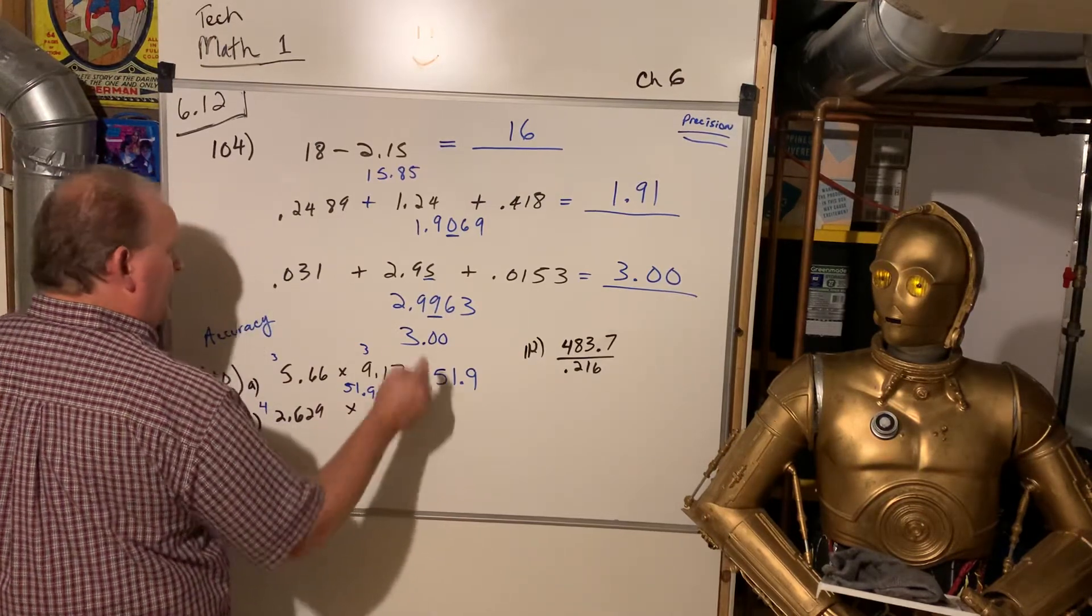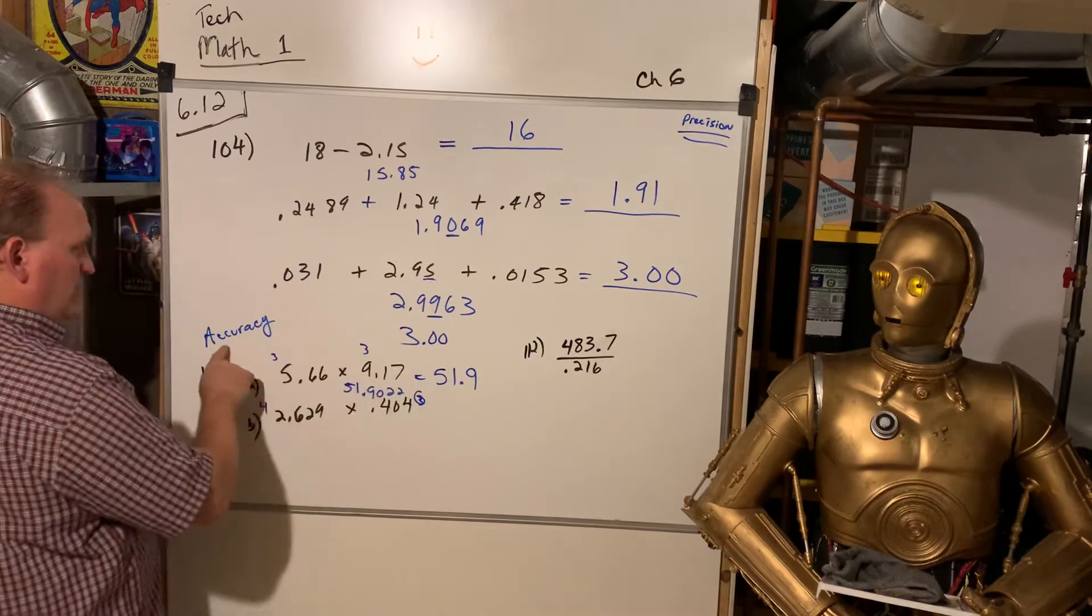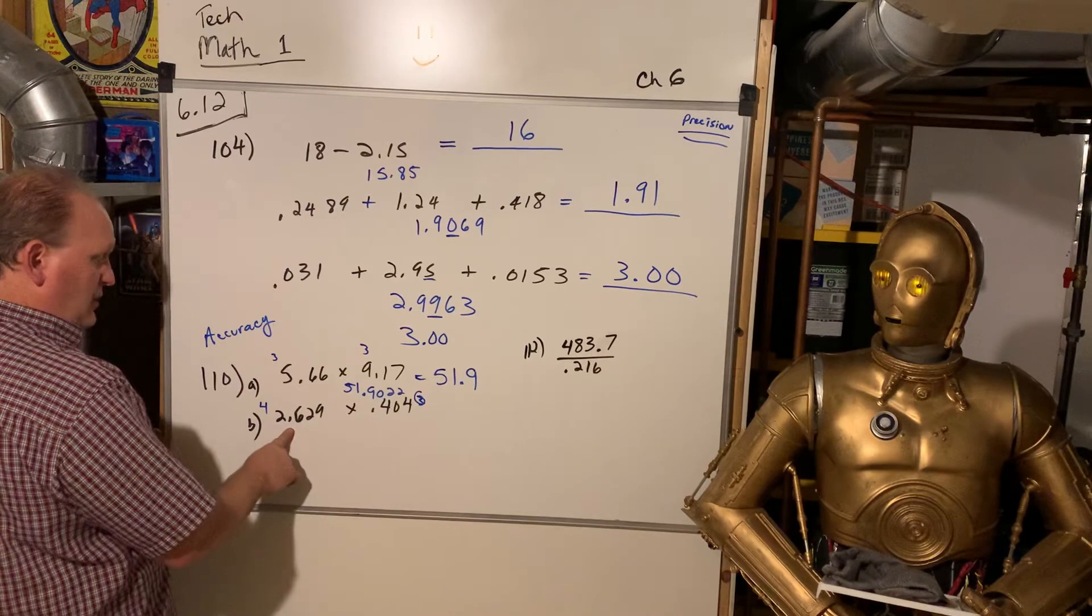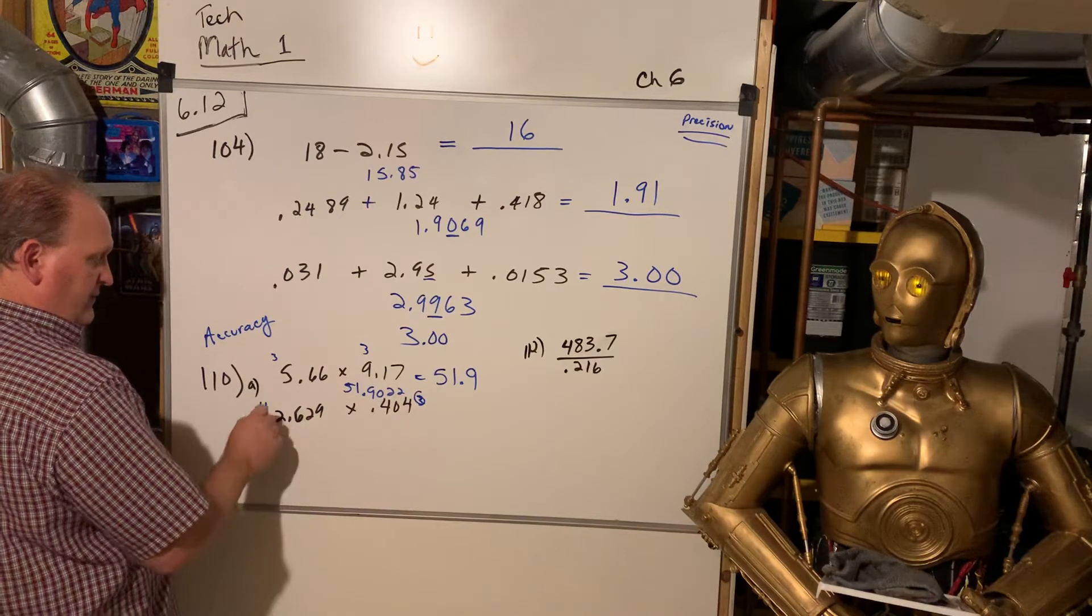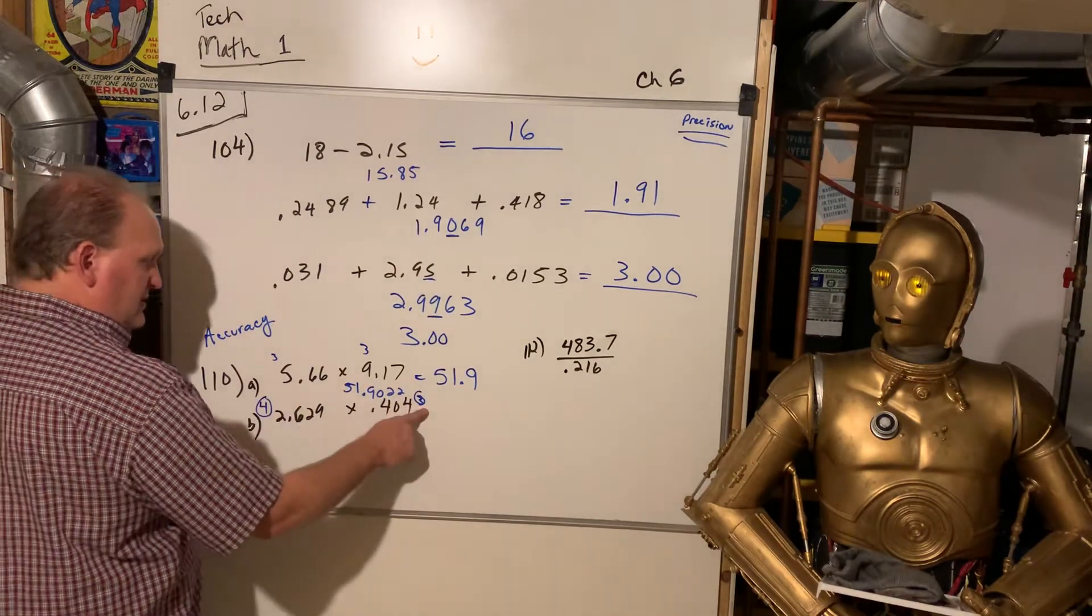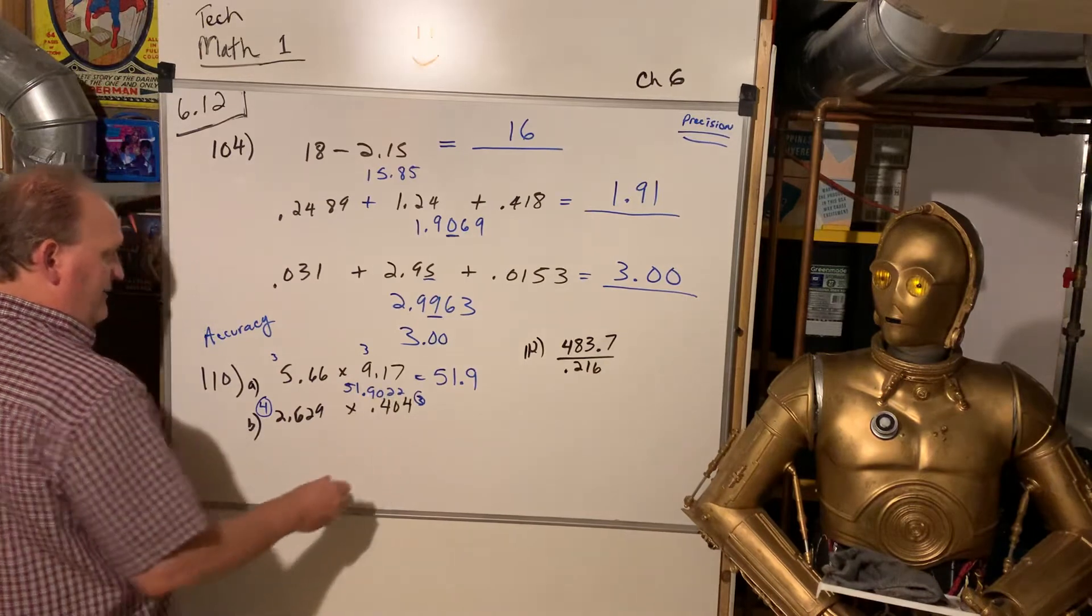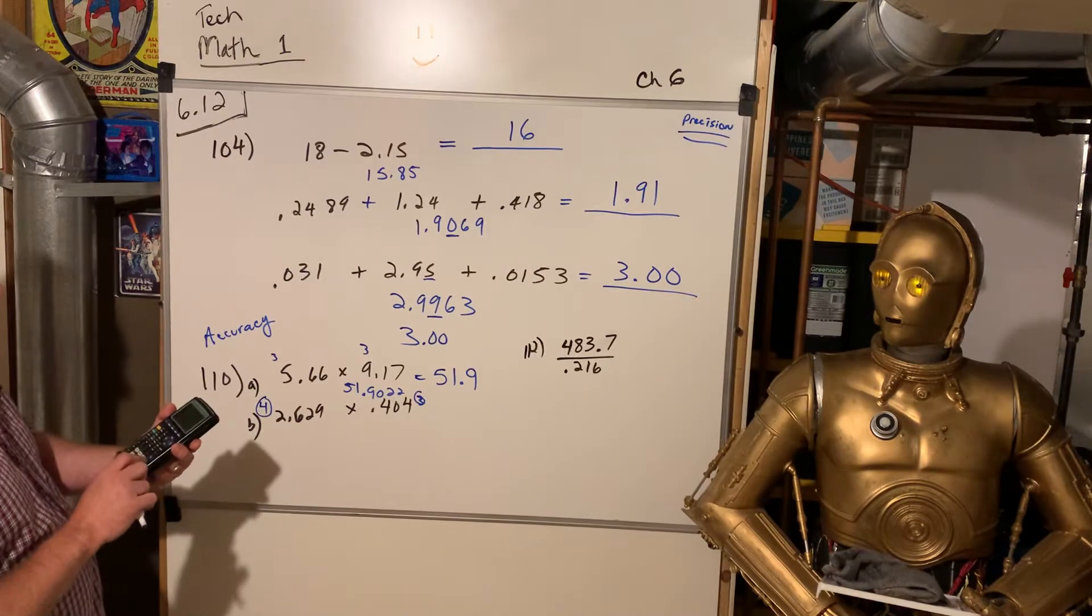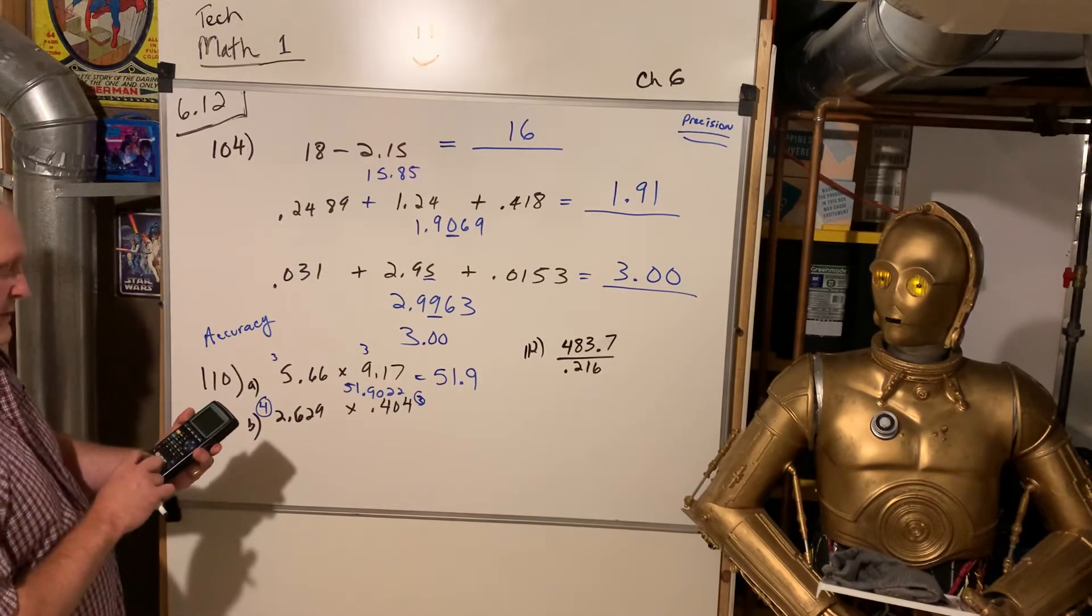Well, now, again, just like what we did up there, we go with the less accurate figure. So, this one is more accurate, that's out to 4 significant digits, and that one is 3. I'm going to make my answer have 3. So, I do 2.629 times 0.404.